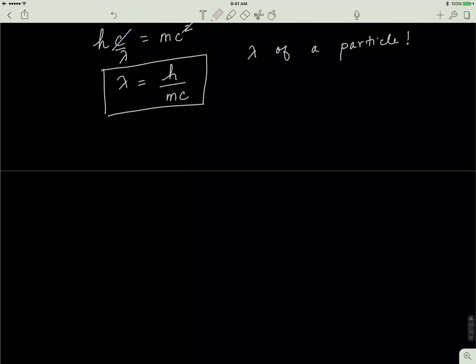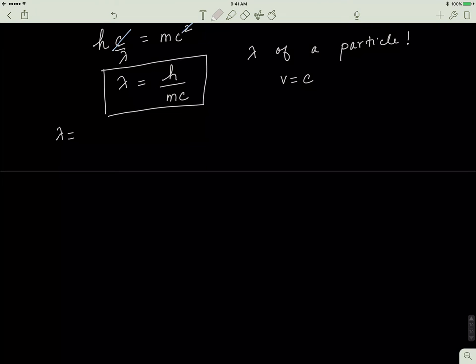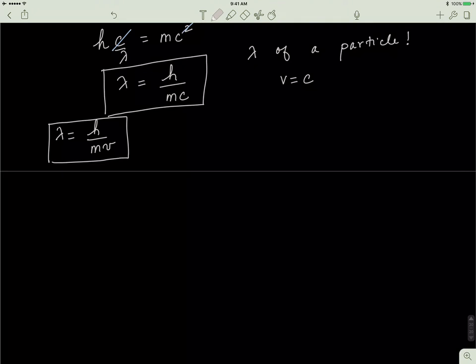So, this is a restrictive case where the velocity of this object is equal to the speed of light. But, particles don't travel at the speed of light. So, I'll make a slight modification to this formula and rewrite it as H over MV. And, as you know, MV is equal to momentum. So, I can also rewrite lambda as H over P.